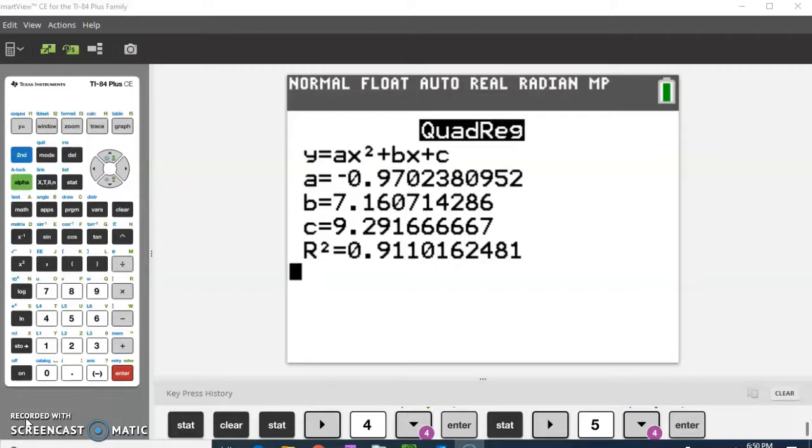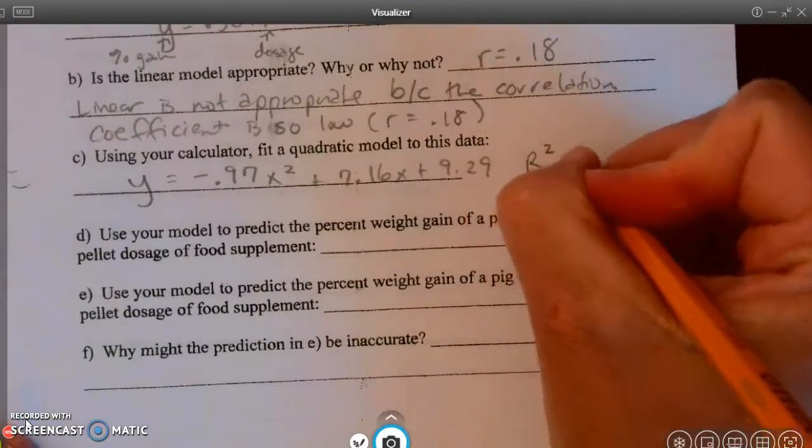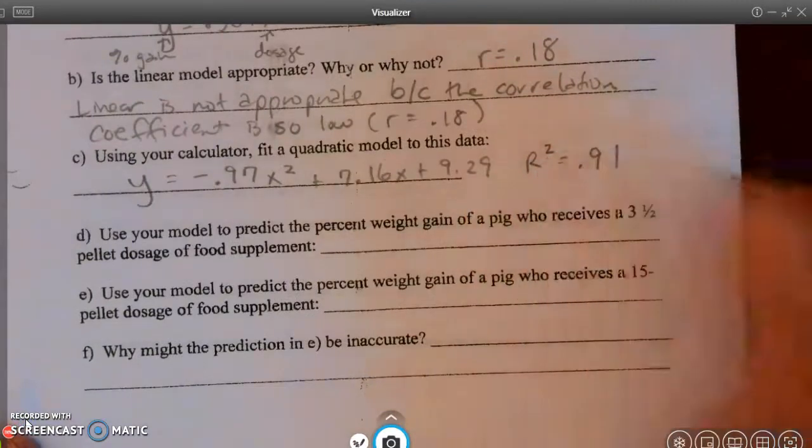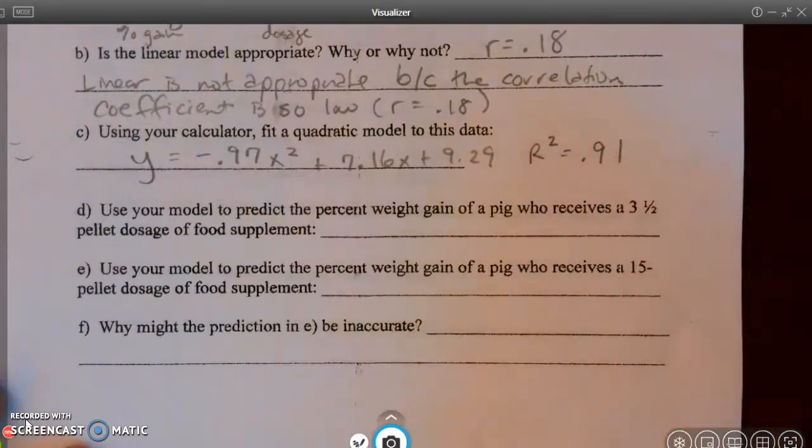since quadratics both increase and decrease, there is no such thing as a correlation coefficient. There is only an R squared value. And this R squared value is 0.91. So the R squared value is 0.91. Which means that it's a pretty good fit for the data.